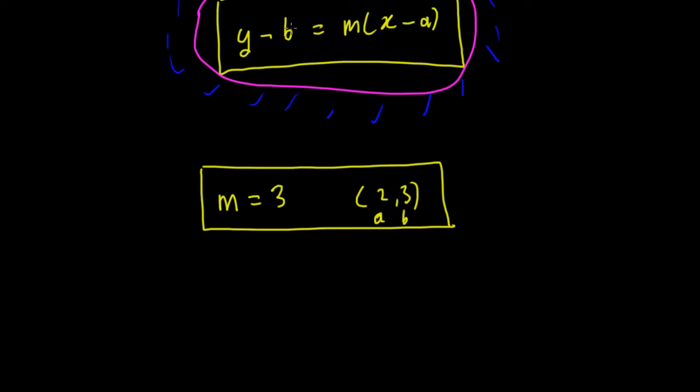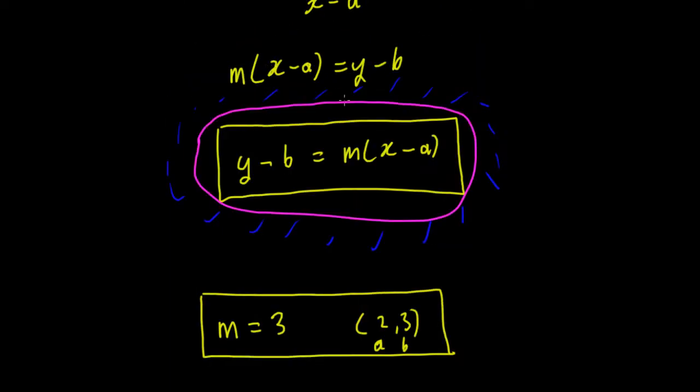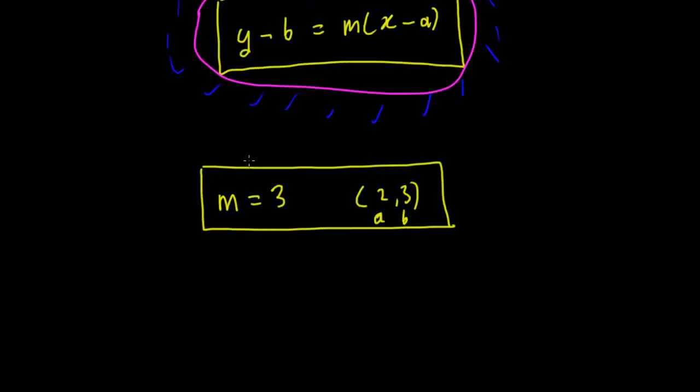So we can use that to find the equation here, to find the equation of this line. So we're able to say then that y minus b, which is 3, will equal the gradient m, which is 3, times x minus the point here a, which is 2.